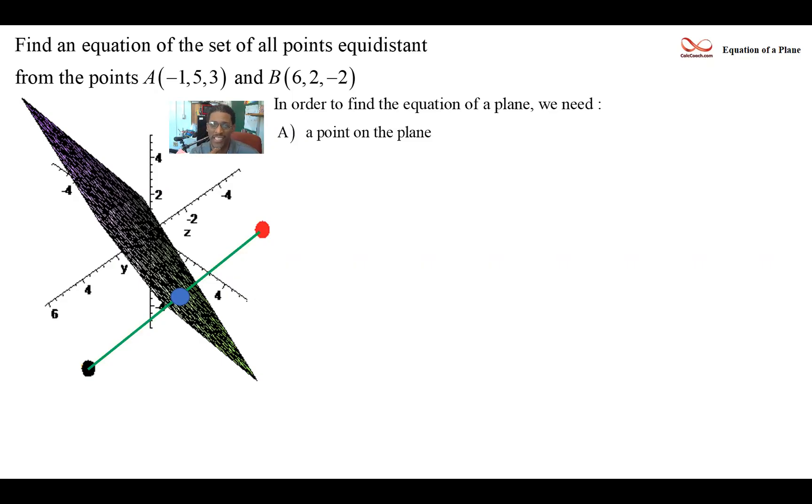Finding the midpoint is just an averaging process. You take the average of the X's, the average of the Y's, and the average of the Z's. You add them up, and you divide by two. So in this case, that'll give us five halves for X, seven halves for Y, one half for Z. That's a point that's definitely on the plane, and that's half of our story.